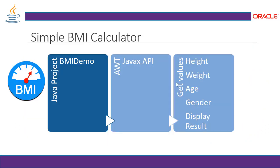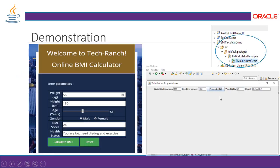For the simple BMI calculator, it's going to be in an Abstract Window Toolkit — a standalone application. It gives a simple look where we display the values and a simple report. For example, weight in kilograms, height in meters, and compute BMI — your BMI score is 46 and the result is unhealthy since it is more than 25.